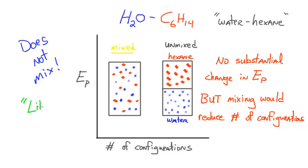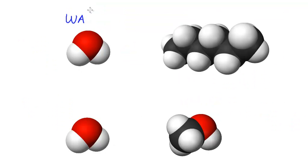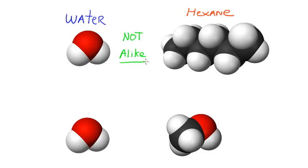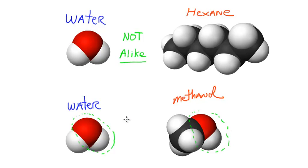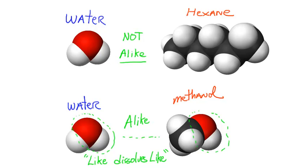There's a term used quite often to describe things like water and hexane: "like dissolves like." It's a term you can use to make predictions of whether or not things mix, and it relates to the molecular structure of the substances and how similar they are. If you look at the structure of water versus hexane, you can see that they are not alike. Whereas if you look at water and methanol, there are structural similarities — the OH group in methanol is a component of the structure of water. Water can also engage in hydrogen bonding, as can methanol, whereas the primary intermolecular force for hexane is dispersion. This is how we use like dissolves like to make predictions.